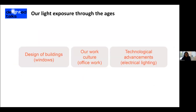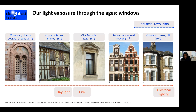When presented with this topic, it gave me an opportunity to ask: what was our light exposure through the ages? I came up with three significant factors that probably influenced our light spectrum — specifically the spectral pattern of light exposure through the ages: the design of buildings and windows, our work culture and office work, and technological advancement — specifically electrical lighting.